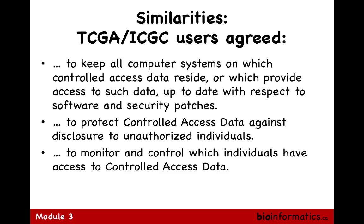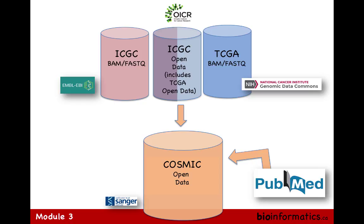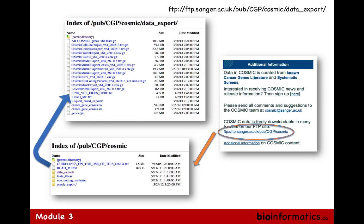COSMIC - Catalogue Of Somatic Mutations In Cancer - is a repository of all somatic mutations, not just from ICGC but from projects around the world - whole genome, whole exome, and targeted panels. After your period of access to controlled data, you're supposed to destroy it - the whole concept of the audit referred to earlier, where ICGC technically has the right to verify you've done so, though it hasn't actually been done.